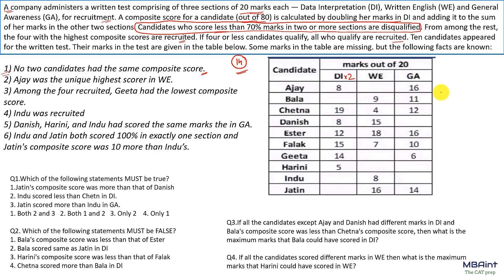The second point says Ajay was the unique highest scorer in DI. We can see that Easter has already got a score of 18, so Ajay will get a score of 19 or 20.